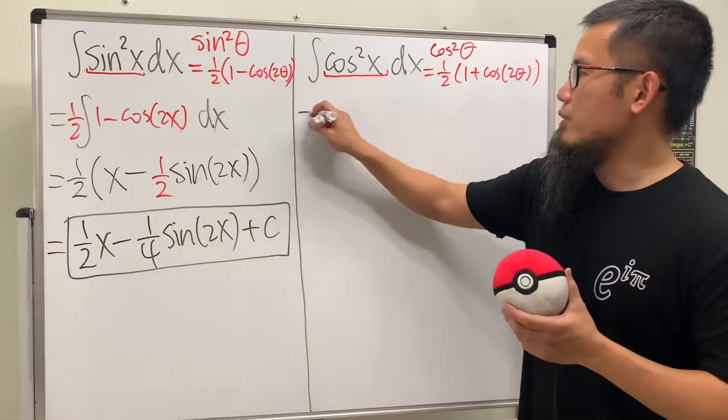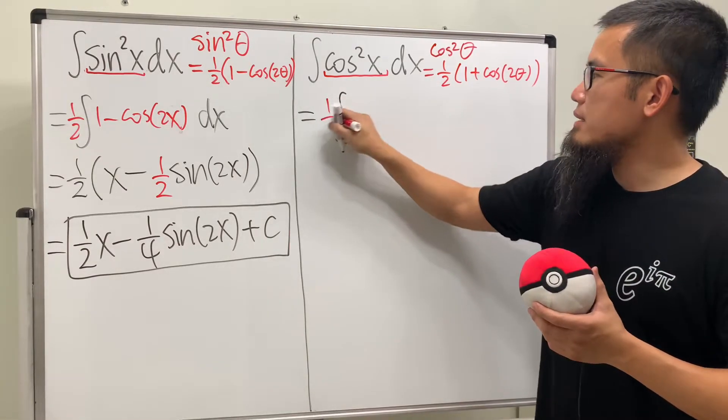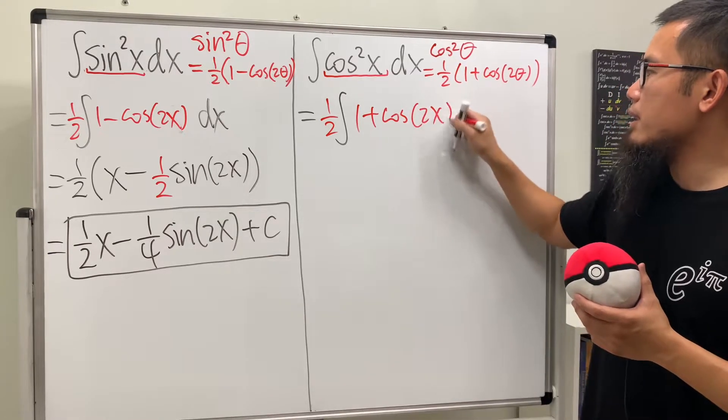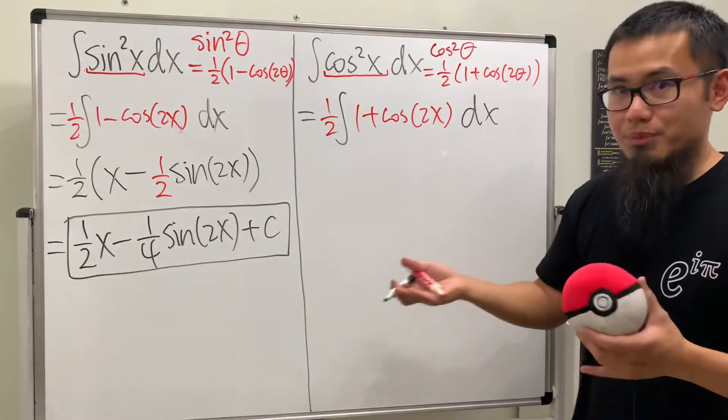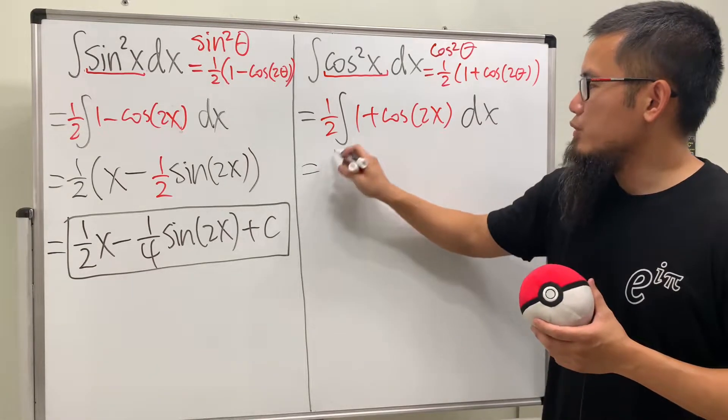So for the second one right here, go ahead and do the same thing, right? 1 half in the front, and then 1 plus cosine of 2x. Yes, both of them are cosine of 2 theta, and then this is just plus, and this is minus, right?